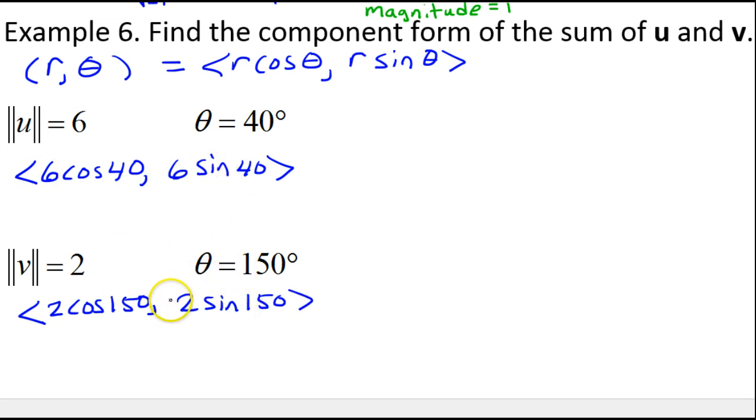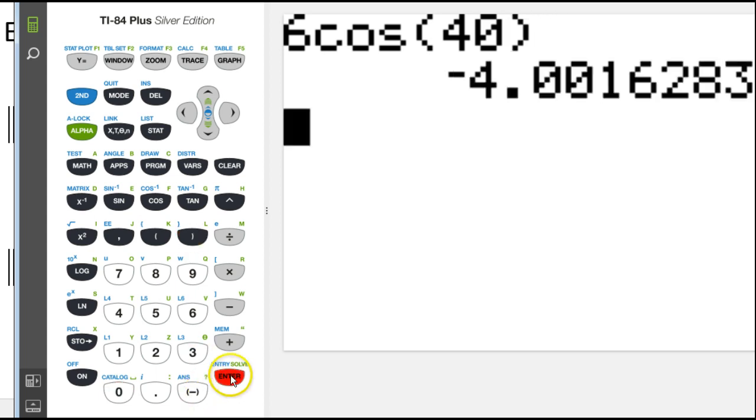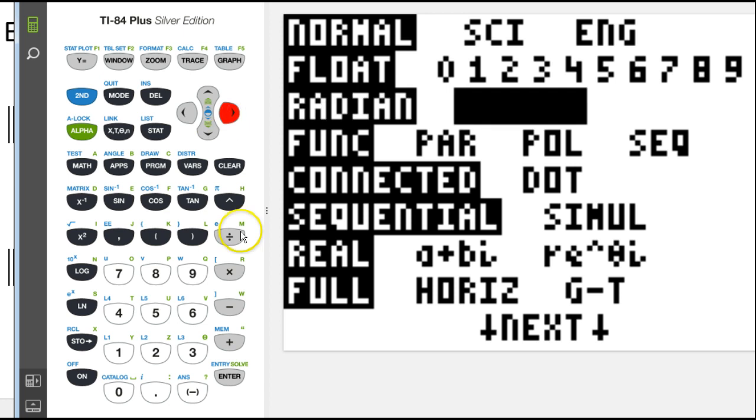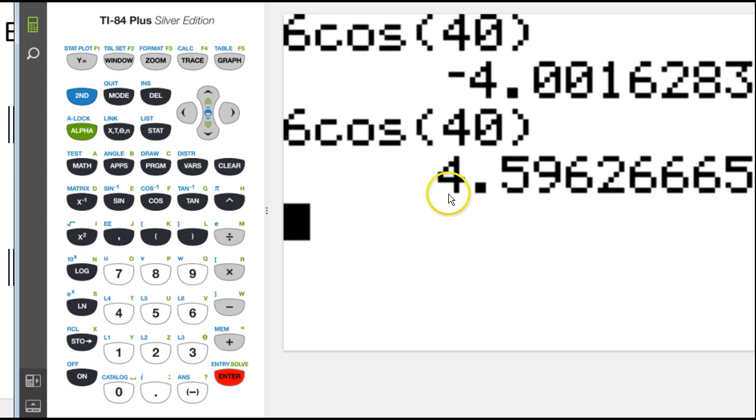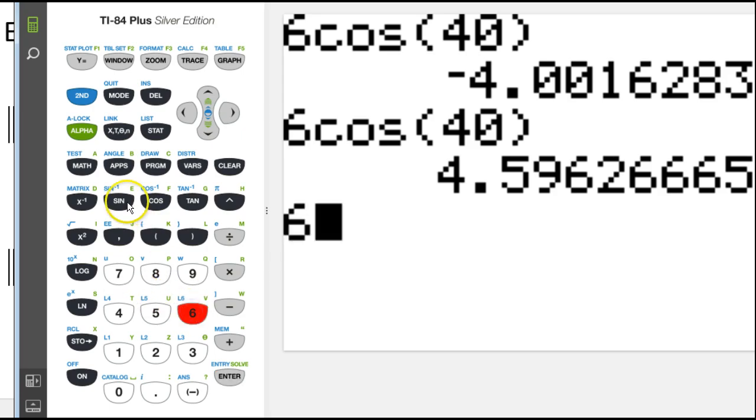Now I'm just going to put all of these expressions in my calculator. For example, if I do 6 cos 40°... oops, I am in radian mode. I need to switch over to degree mode, so be careful, make sure your calculator is in degree mode. Let's try that again. Okay, 4.6. How about 6 sin 40°? That's 3.86.